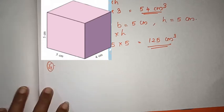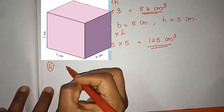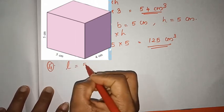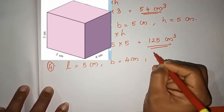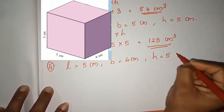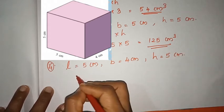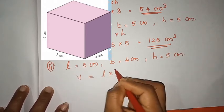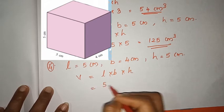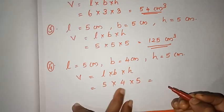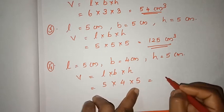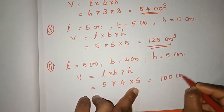Now we have the fourth question — the next rectangular block. The length is 5 cm, the breadth is 4 cm, and the height is 5 cm. Volume is length × breadth × height, that is 5 × 4 × 5. 5 × 4 = 20, and 20 × 5 = 100 cm³.